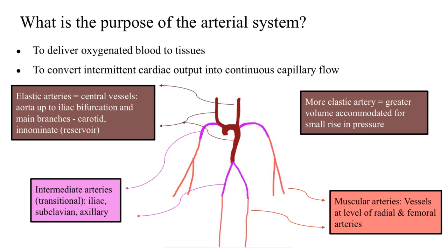When it comes to the division of arteries, there are three gross levels. Number one are the elastic arteries, or the central vessels, which consist of the aorta up to the iliac bifurcation and also the main branches of the aorta, which include the carotids and the innominate artery. Together, these elastic arteries are known as the reservoir arteries because they have a lot of elastic tissue in them. The more elastic an artery is, the greater is the volume accommodated by that artery for a small rise in pressure.